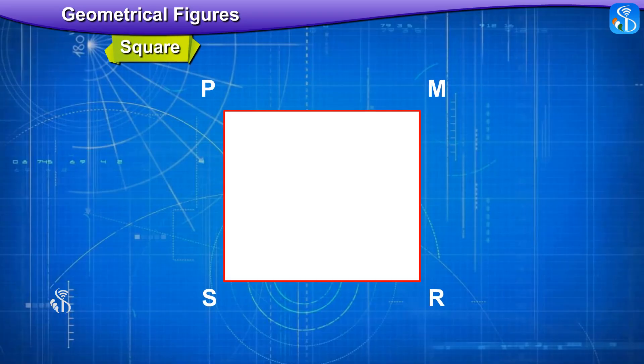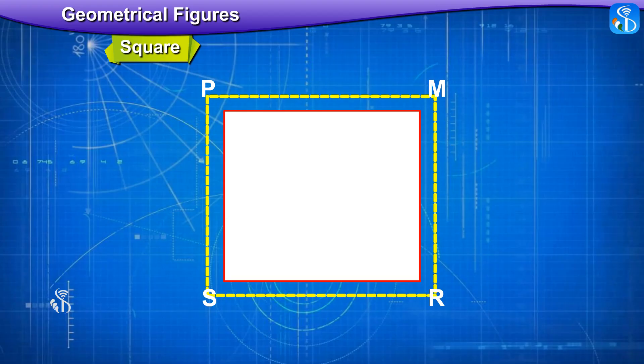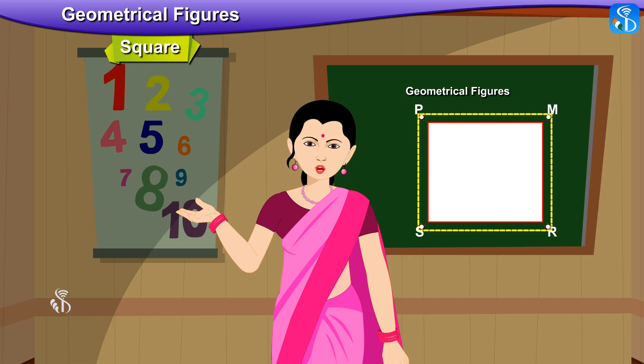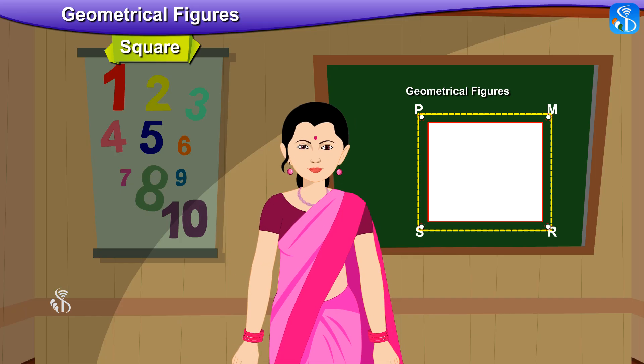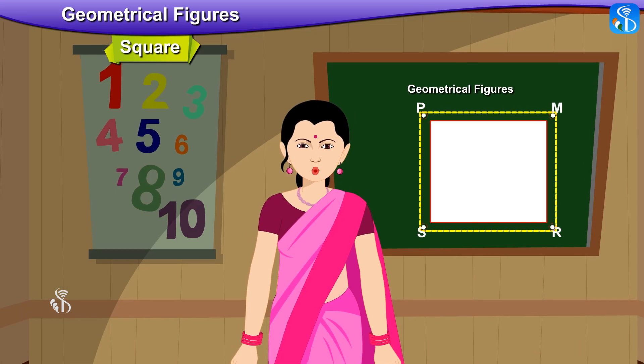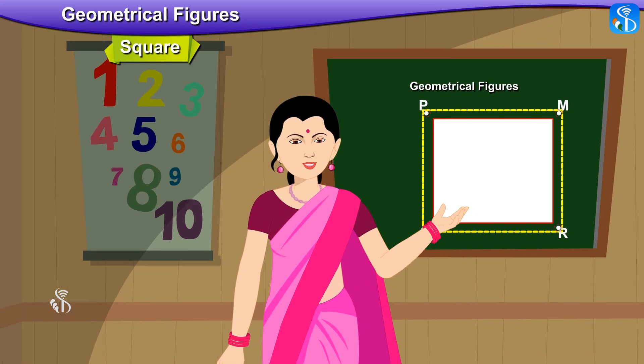Students, observe this figure carefully and tell me what you see. In this figure there are 4 sides and 4 vertices. Absolutely correct! This figure is a square.